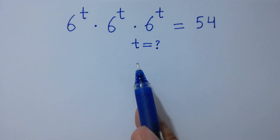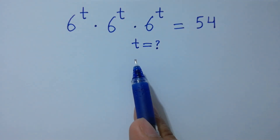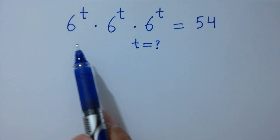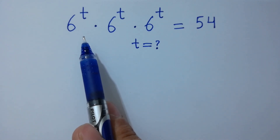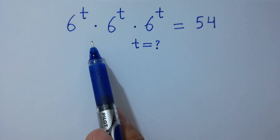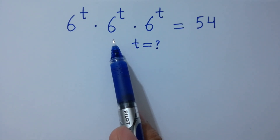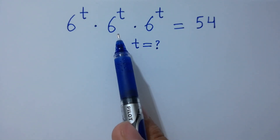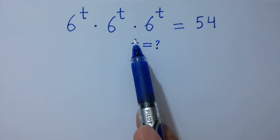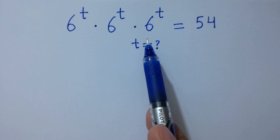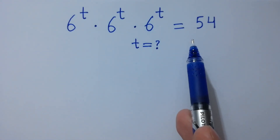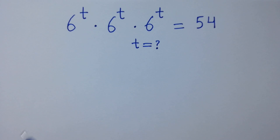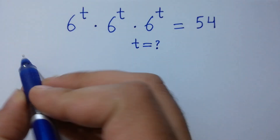Hello friends. Find the value of t if 6 to the power t times 6 to the power t times 6 to the power t equals 54. Let's have a solution.